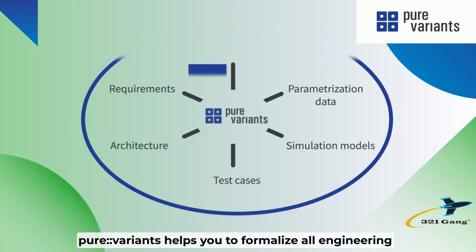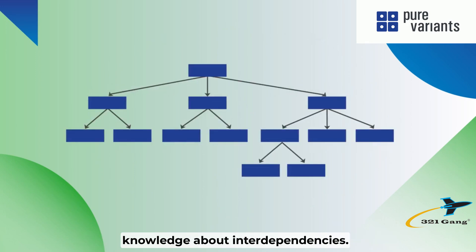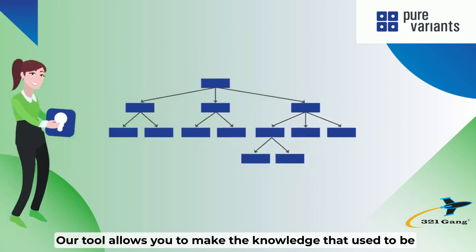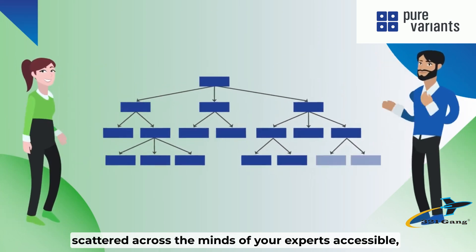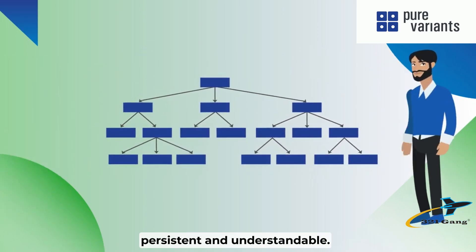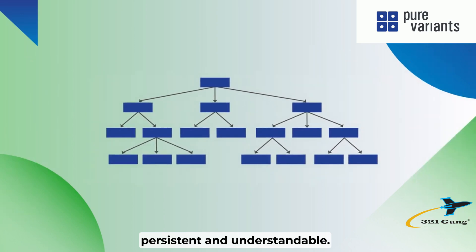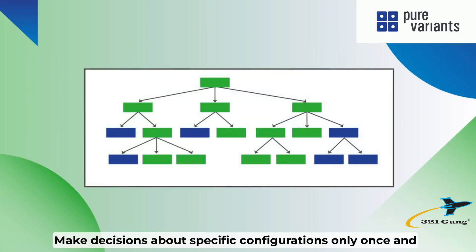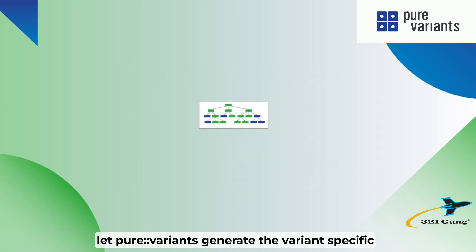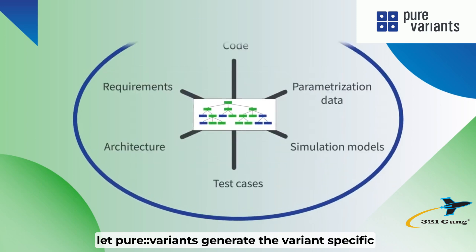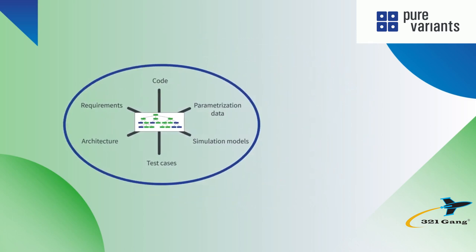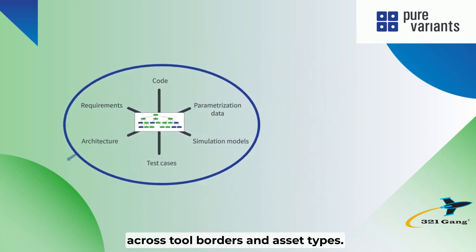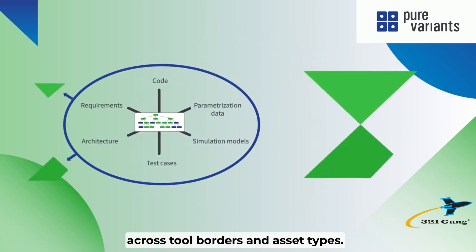Pure Variance helps you to formalize all engineering knowledge about interdependencies. Our tool allows you to make the knowledge that used to be scattered across the minds of your experts accessible, persistent, and understandable. Make decisions about specific configurations only once and let Pure Variance generate the variant specific engineering assets for you across tool borders and asset types.